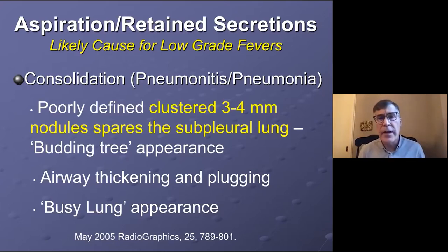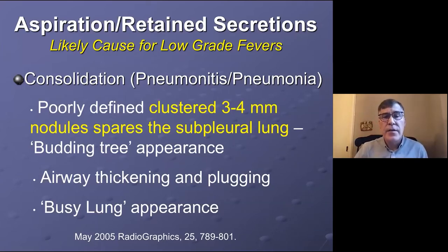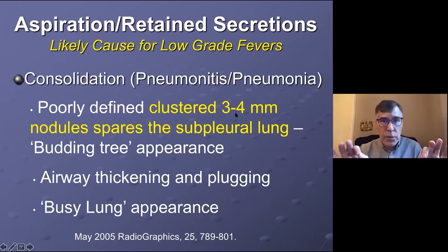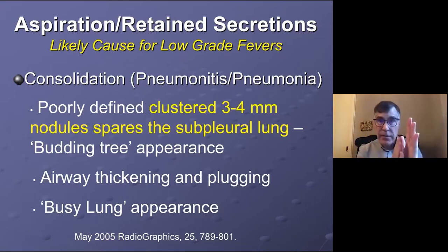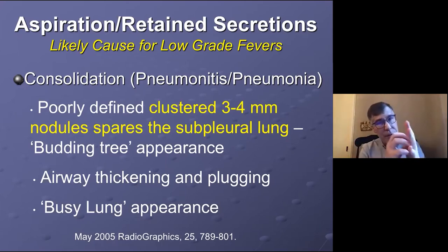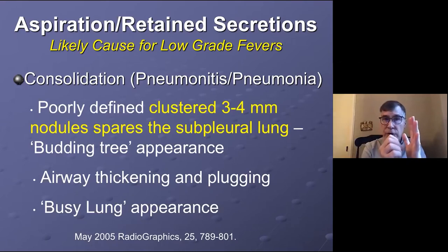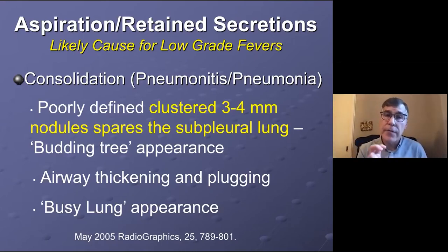What does it look like? It looks different than atelectasis in most cases. You might see poorly defined three to four millimeter clustered nodules — that's really key. It spares the subpleural area, so if it looks like it's touching the pleura, that's probably more of a consolidation. This is the so-called tree-in-bud appearance, and that's what it looks like on a radiograph: three to four millimeter nodularity with airway thickening and mucus plugging.